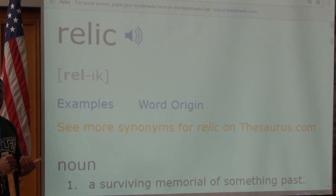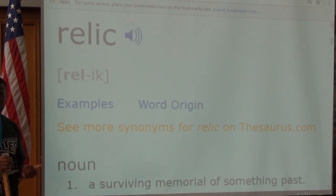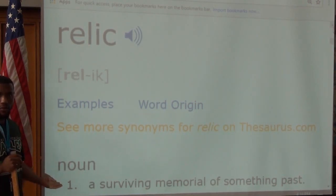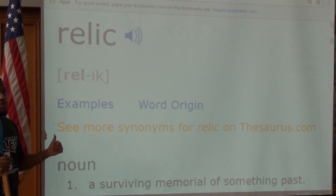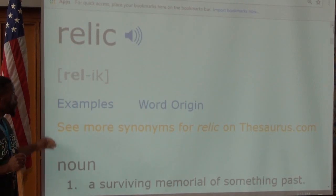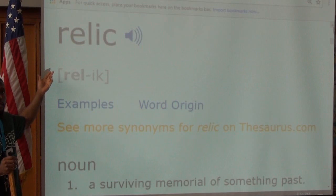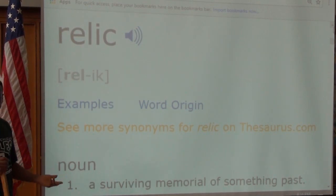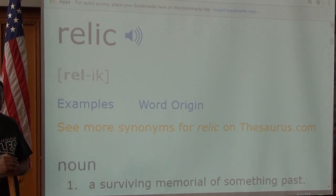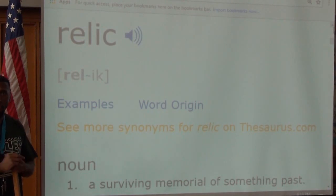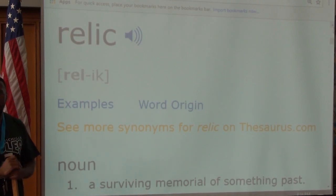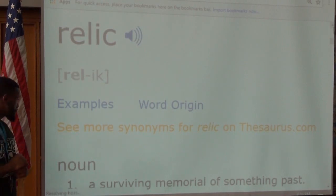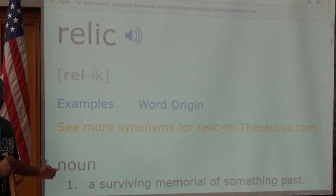We also want to refer to the part of speech of a word. There are eight different types of parts of speech, and every single word in the English language belongs to one of those eight. This word 'relic' is a noun — a person, place, thing, or idea. A relic is a thing. We use nouns differently than other parts of speech. Add 'parts of speech' to your notes. Parts of speech helps us to know how to use the word. If it's a noun, we can't use it as a verb. If it's a verb, we can't use it as an adjective.